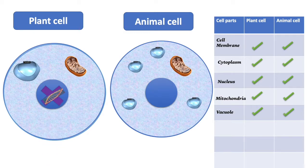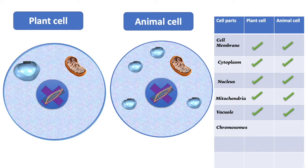This is the chromosome. Chromosomes are thread-like structures that are located inside the nucleus. They contain the genetic material, DNA. These control how the cell develops.